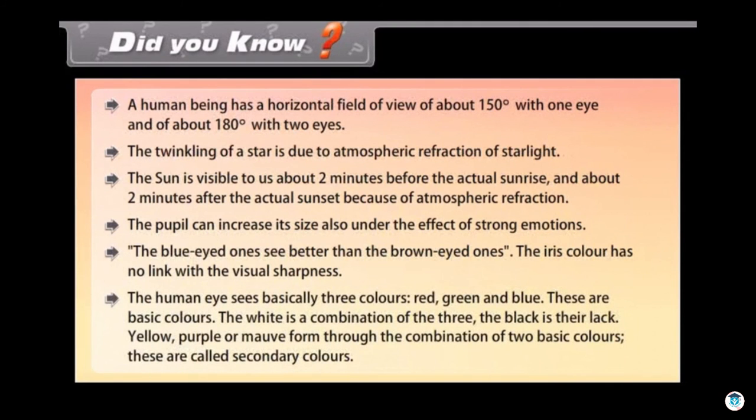The human eye sees basically three colors: red, green, and blue. These are basic colors. The white is a combination of the three. The black is their lack. Yellow, purple, and mauve form through the combination of two basic colors. These are called secondary colors.